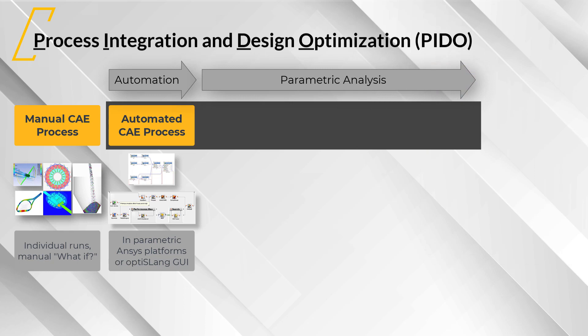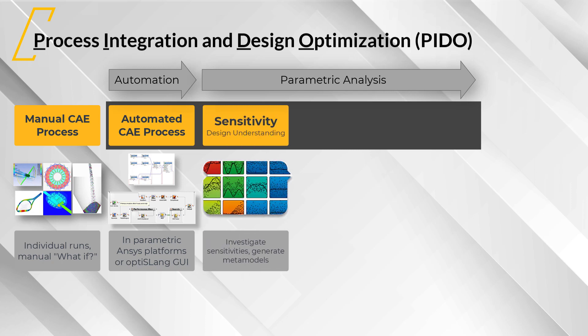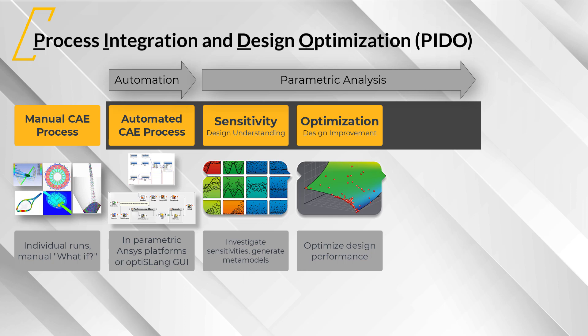For the subsequent design optimization, you can use a library of design exploration algorithm packages in an easy-to-use module that can be connected to process integration. You may start with the design understanding and exploration phase. With the help of a sensitivity analysis, you can investigate parameter importance and reduce complexity by focusing only on the relevant parameters. Automatically generated response surfaces and metamodels help you understand your CAE model under varying parameters and can be used in subsequent optimization.